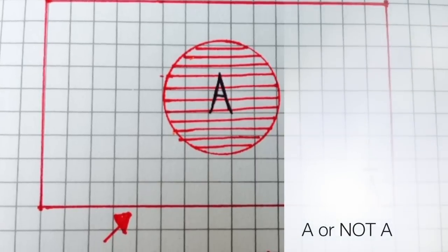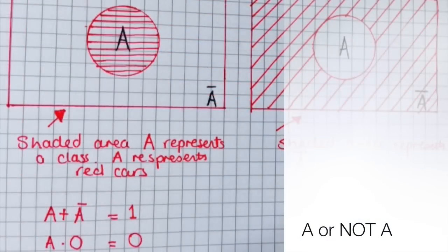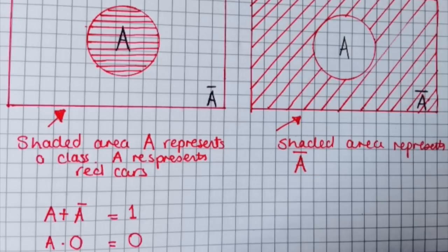This diagram represents A or NOT A. In this case, the shaded area represents A, and as you can see, outside the circle represented by diagonal lines is NOT A.